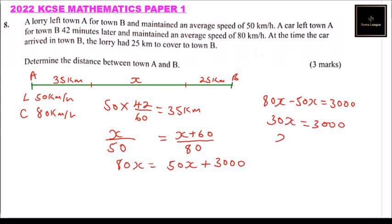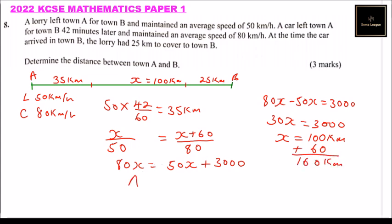So we divide both sides by 30, and we get x equals 100 kilometers. Therefore, the distance between town A and town B is x plus 60, which gives us 160 kilometers. So AB equals 160 kilometers. That's how you work out that, and by doing that you'll be able to get three marks. You need to be systematic so that you understand what you are required to find, and that will be easier for you.